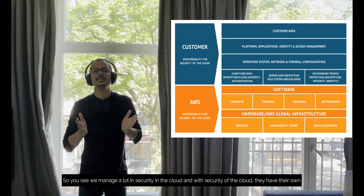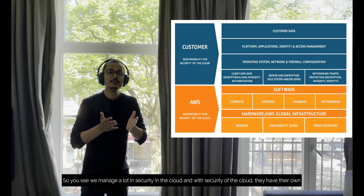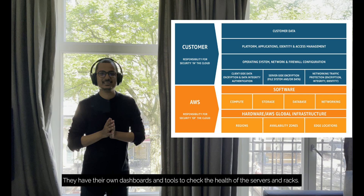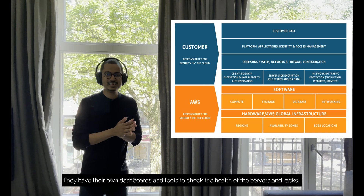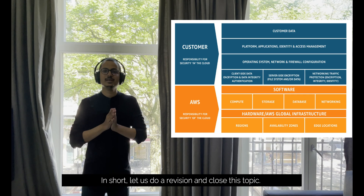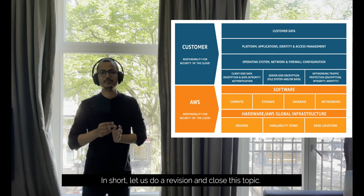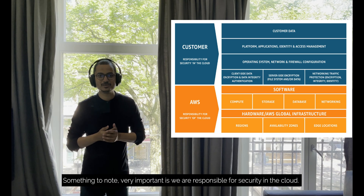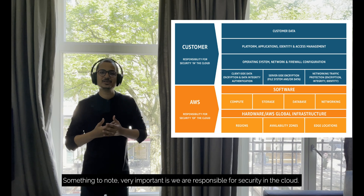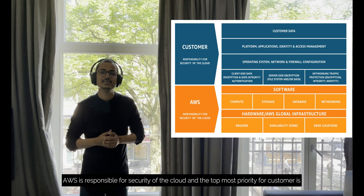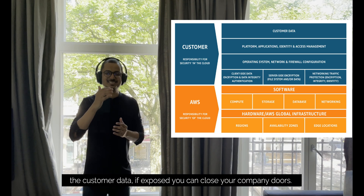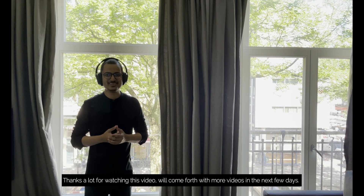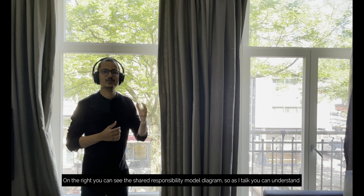So if you look at security in the cloud, we handle a lot of security responsibilities. On the AWS side, they have their own ops center and management team who monitor data centers daily. To summarize: the shared responsibility model has two pairs — AWS is responsible for security of the cloud, and we as customers are responsible for security in the cloud. The topmost priority is customer data. You can see the shared responsibility model image on the left side of the screen.